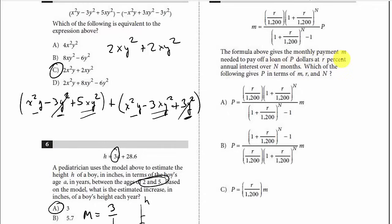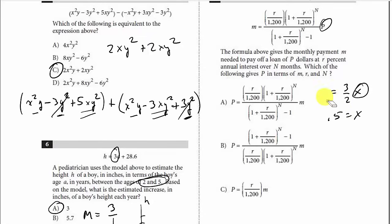The formula above gives the monthly payment M needed to pay off a loan of P dollars at R percent annual interest over N months. Which of the following gives P in terms of M, R, and N? This is easy — we're just solving for P by multiplying by the reciprocal, the same way you'd solve 5 equals 3 halves times X by multiplying by 2 thirds. Flipping the fraction, this goes into the numerator. Looking at the choices, that's B.